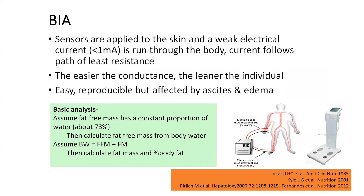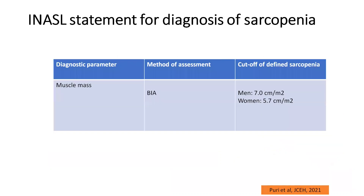Then comes bioimpedance analysis (BIA), a method of assessing fat-free muscle mass. Sensors are applied to the skin, an electrical current is run through the body, and based on the body's composition and current flow, the total fat-free muscle mass is calculated. The leaner the patient, the easier the conduction. The BIA cutoff for muscle mass, per Indian National Association for Study of Liver cutoffs, is 7 for men and 5.7 for women.